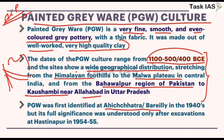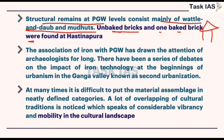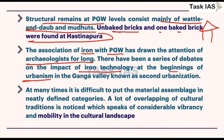PGW was first identified at Ahichchhatra at Bareilly in 1944, but its significance was only understood when excavations at Hastinapur were done, with archaeologist BP Lal contributing greatly. Structural remains at PGW levels consist mainly of wattle-and-daub mud huts; unbaked bricks and one big brick were found at Hastinapur. The association of iron with PGW has drawn the attention of archaeologists for long, and there have been a series of debates on the impact of iron technology at the beginning of urbanism in the Ganga valley — known as second urbanization.